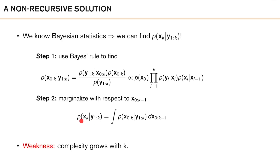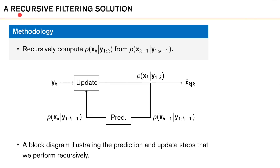As we typically want to calculate this posterior density at each time step k, we want the complexity to be roughly the same at each time instance and especially not grow over time. The weakness of this approach is that it grows with k. The solution is that we calculate the filtering density recursively, where the general methodology is to use the posterior density from the previous time instance together with our conditional independence assumptions to calculate the new posterior at the current time. Here is an illustration that summarizes the general methodology of the recursive filtering solution.